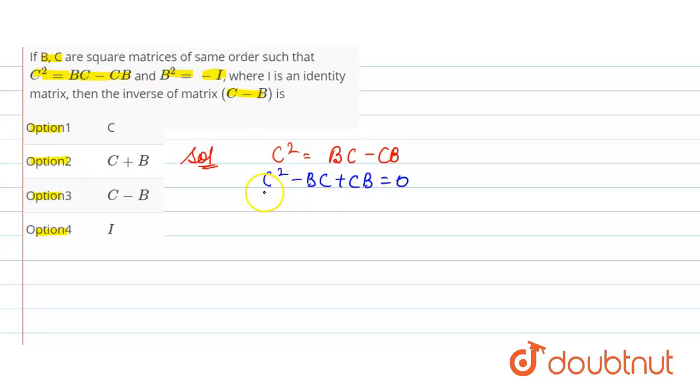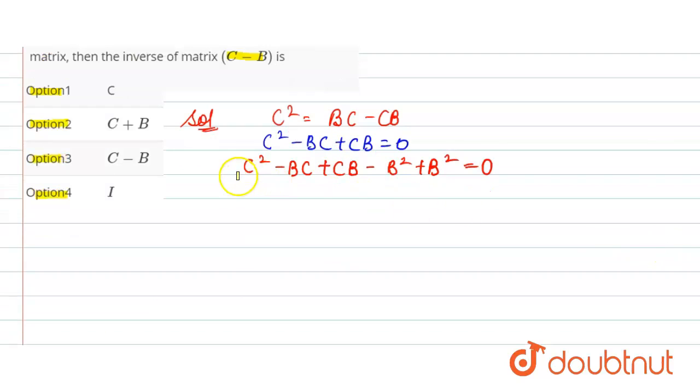Now to solve this, add and subtract by B squared. So here we get C squared minus BC plus CB minus B squared plus B square is equal to 0. Now see how to write this part.